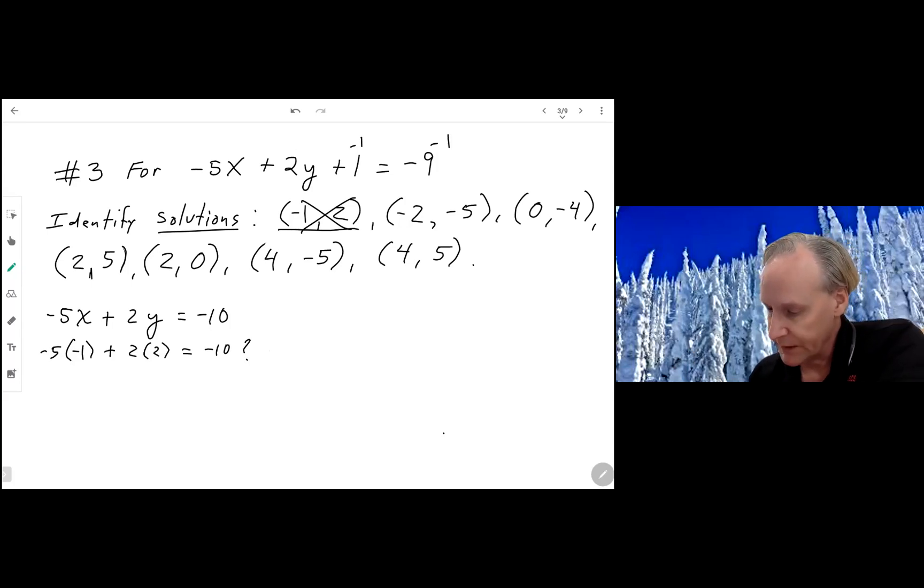Now I'm going to have you fill in all the rest and substitute them in. So our next one, negative 5 times negative 2 plus 2 times negative 5, is that equal to negative 10? Positive 10 plus negative 10 is zero. So this one is not true either. So now we have another one. Negative 5 times 0 plus 2 times negative 4. Is that equal to negative 10? And that's not either. So we're looking for solutions that will make this true. Let's see if this next one will work. Negative 5 times 2 plus 2 times 5. Is that equal to negative 10? That's zero. So this one is not a solution.